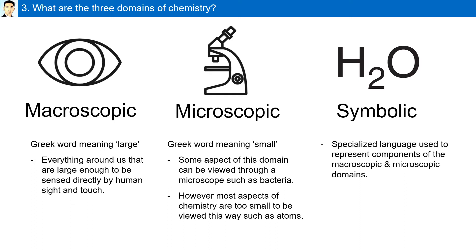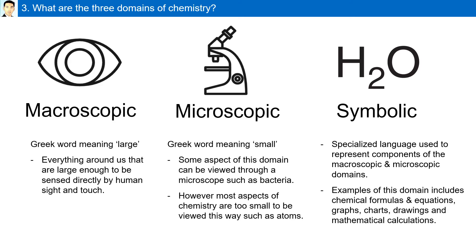The symbolic domain is a specialized language used to represent components of the macroscopic and microscopic domains. Examples of this domain include chemical formulas such as H2O — shown above is the formula for water — and equations, charts, graphs, diagrams, and mathematical calculations.